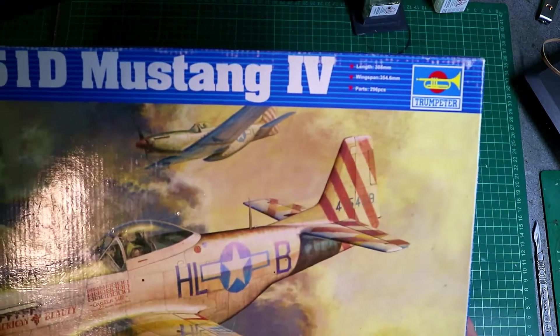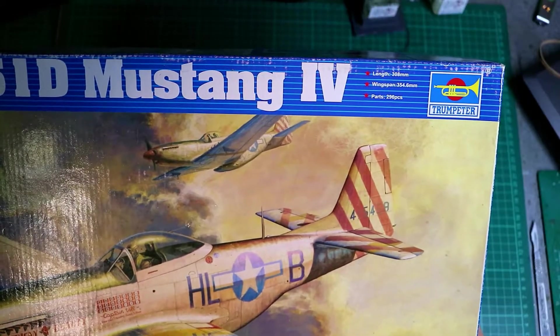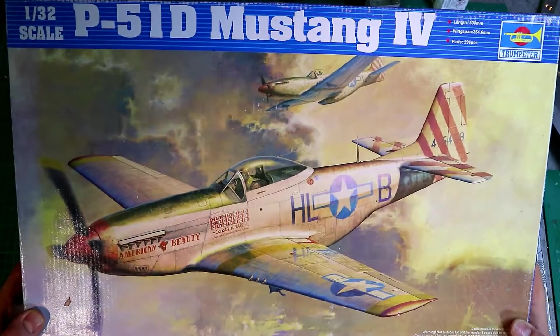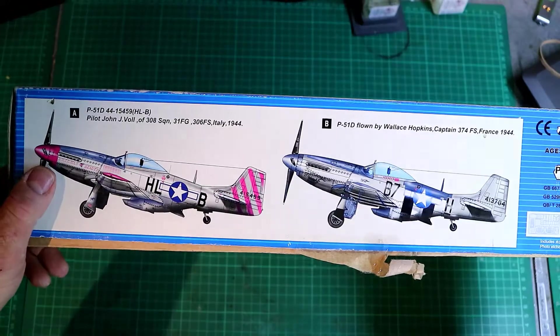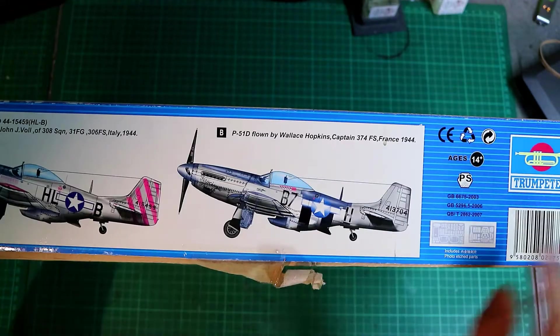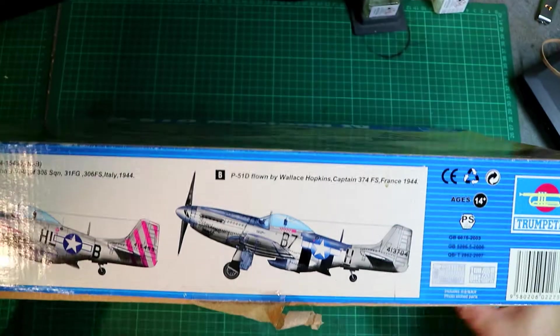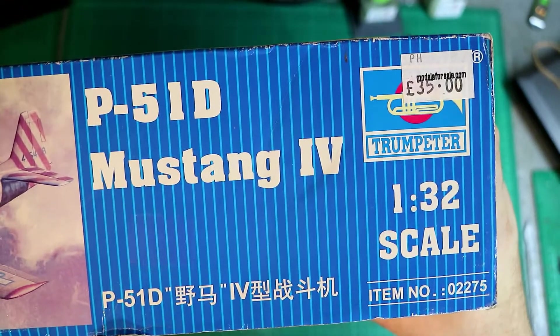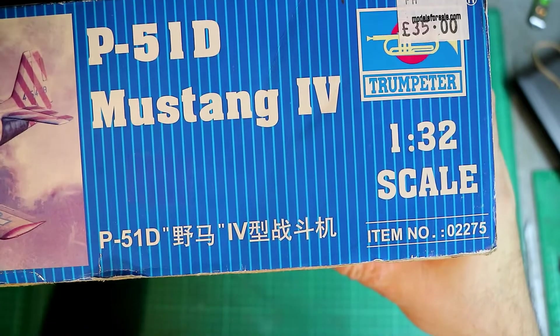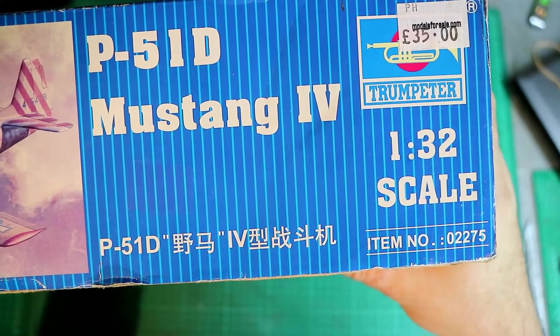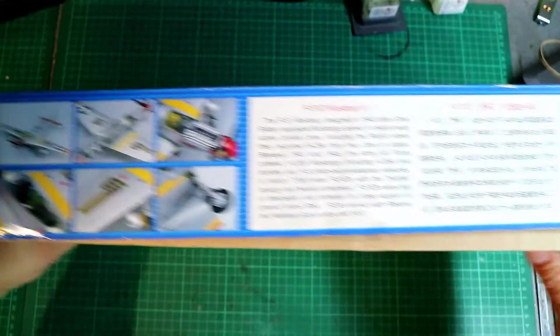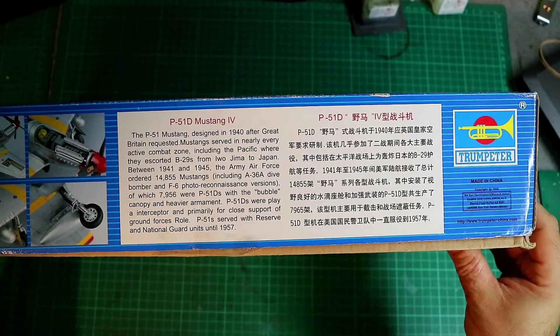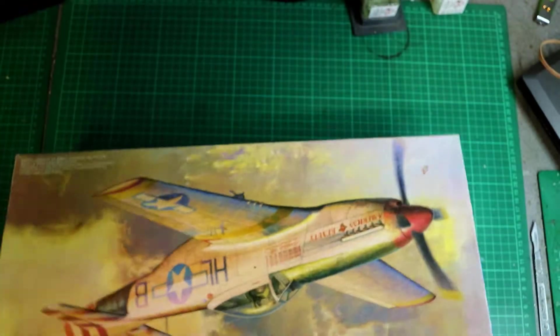You've got some specs here, parts, etc. 296 pieces, quite a nice bit of box art there. You've got a couple of decal scheme options. It comes with a little bit of photo etch down here, so that's nice. Quite a big box. Item number 02275. Nice bit of the made model, a bit of information on the model itself.